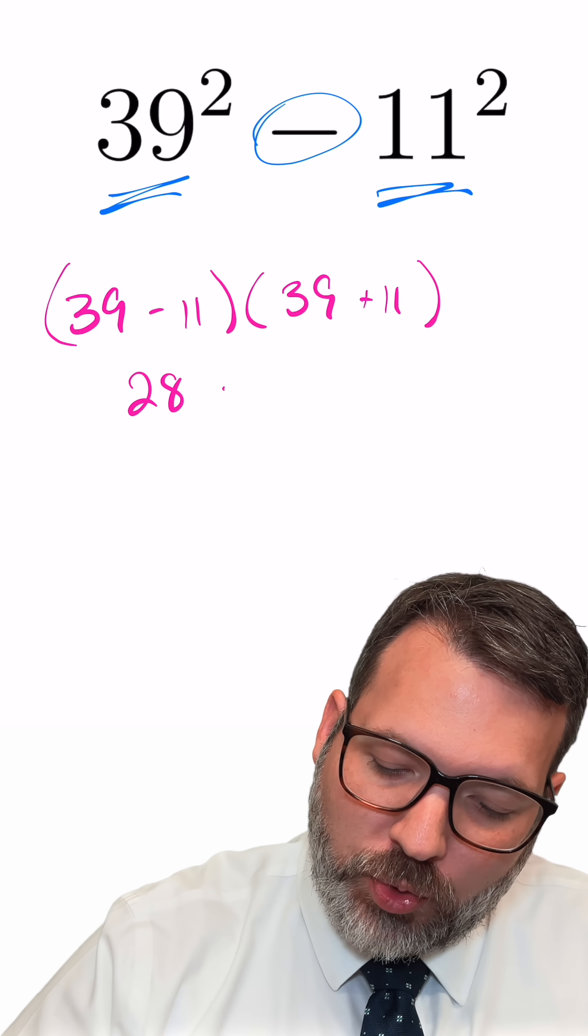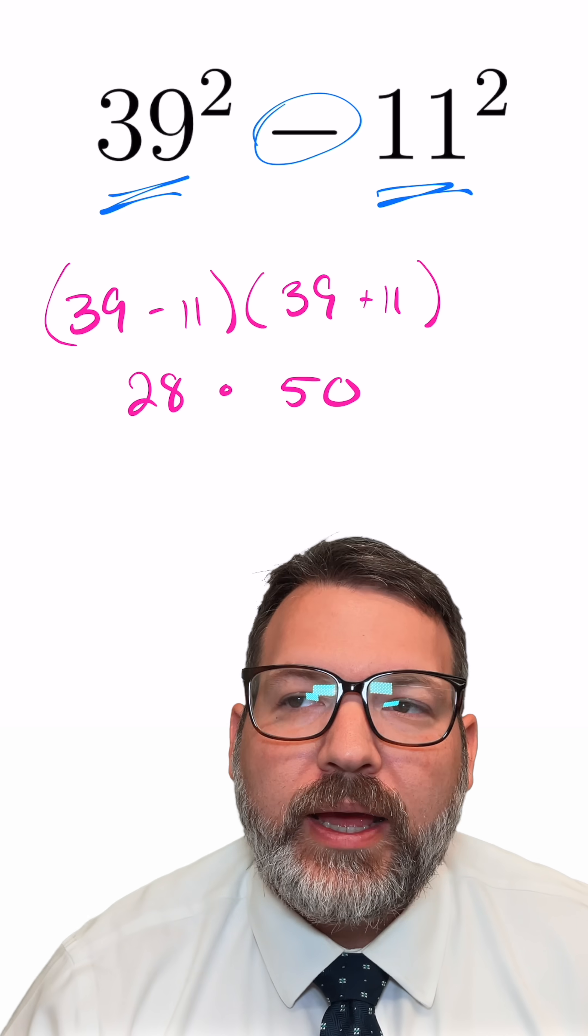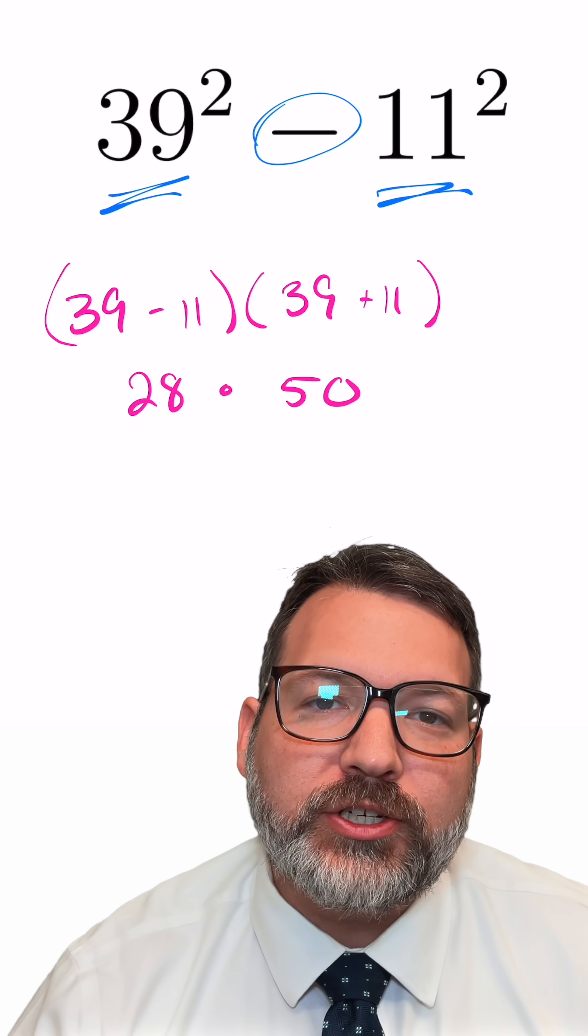39 minus 11 is 28, 39 plus 11 is 50, and now we can see where that nice calculation is coming from.